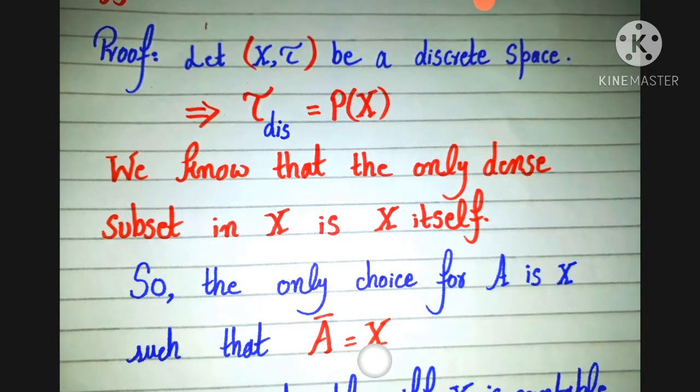We know that the only dense subset in X is X itself. Here we had to choose a subset which is dense in X, so X itself is dense in X as a subset.